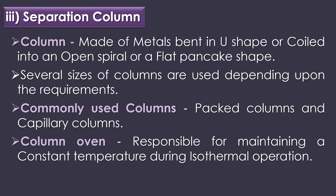The third part of gas chromatography is the separation column, which is the heart of the instrument. The column is made of metal bent in a U-shape or coiled into an open spiral or flat pancake shape. Several sizes of columns are used depending on requirements; the commonly used columns are packed columns and capillary columns. The column is enclosed by a column oven responsible for maintaining a constant temperature during isothermal operations.